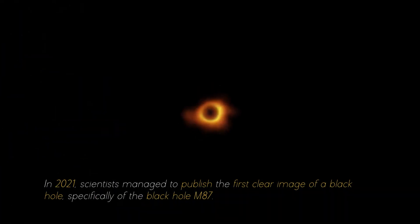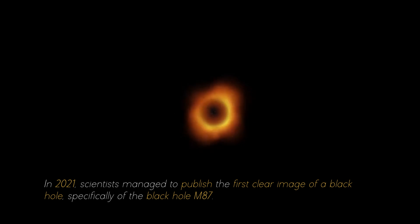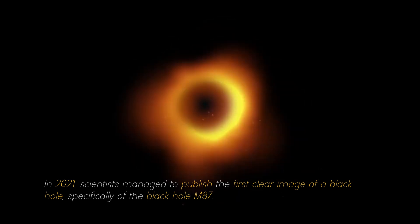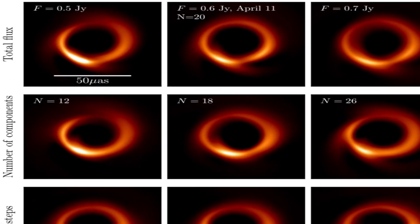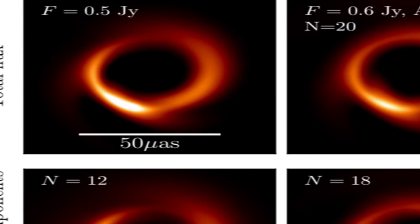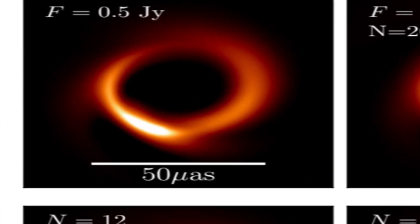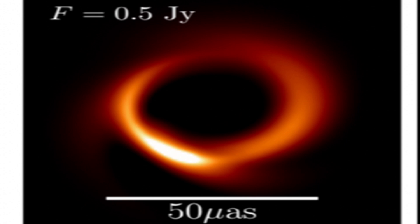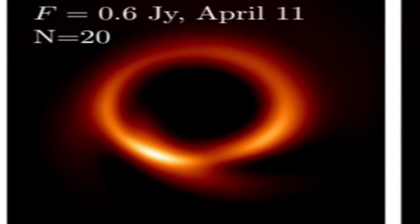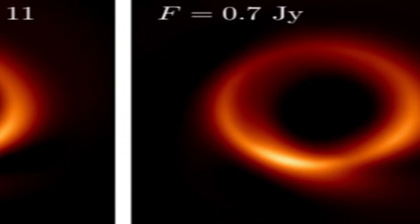In 2021, scientists managed to publish the first clear image of a black hole, specifically of the black hole M87. For several consecutive nights, photographs of the black hole were taken, and with each image researchers collected more evidence about it. It was necessary to combine the individual photographs to obtain a complete image.